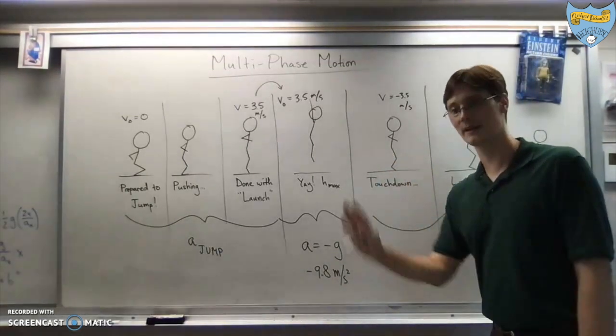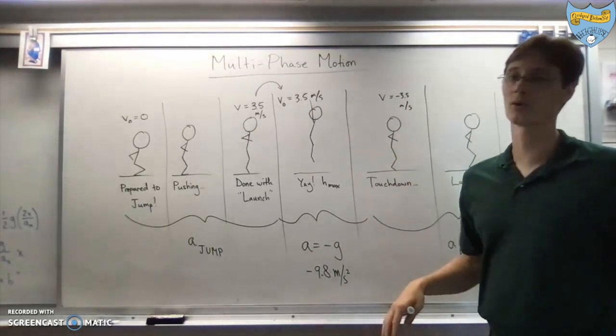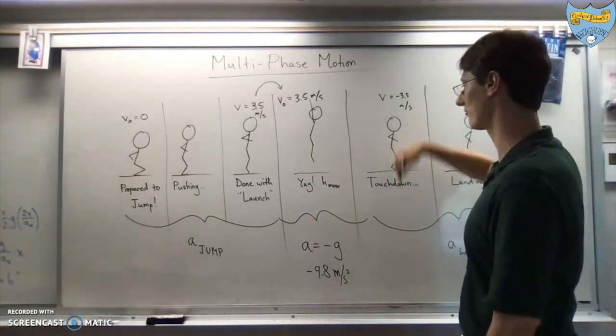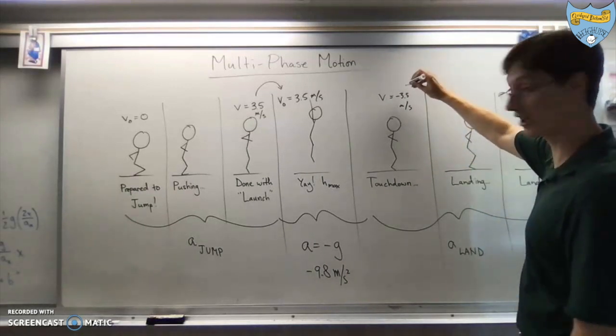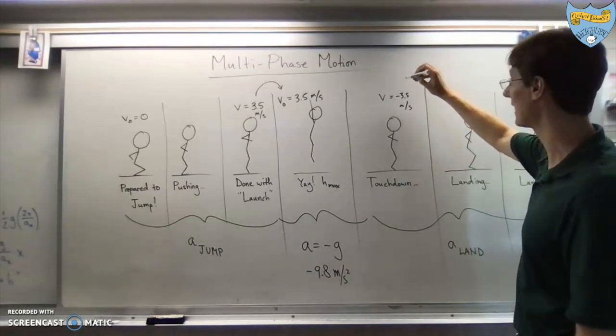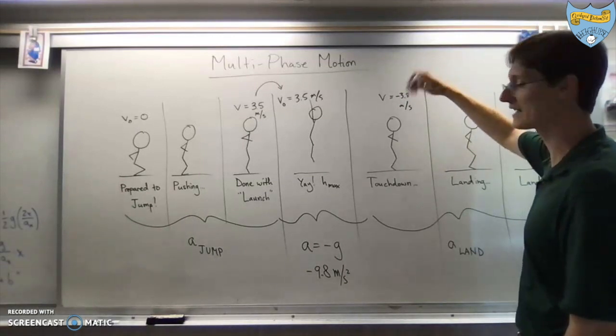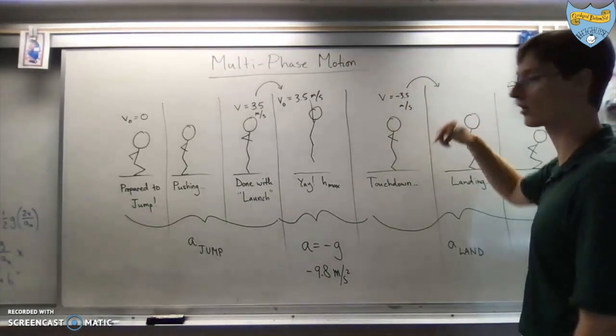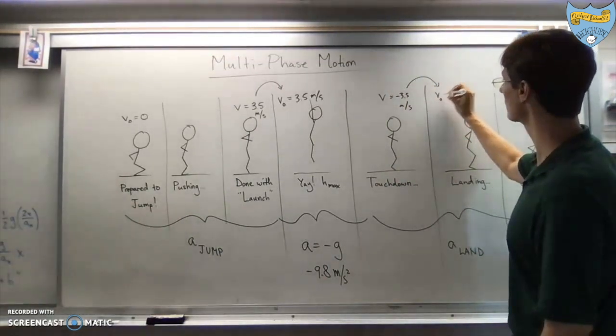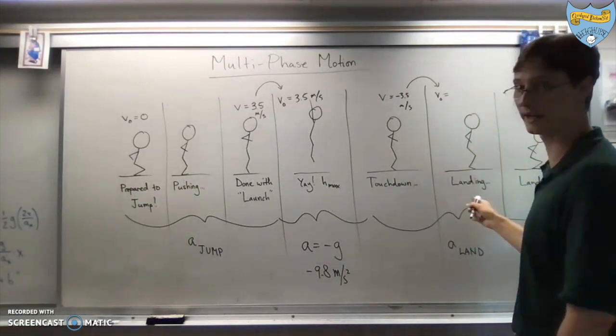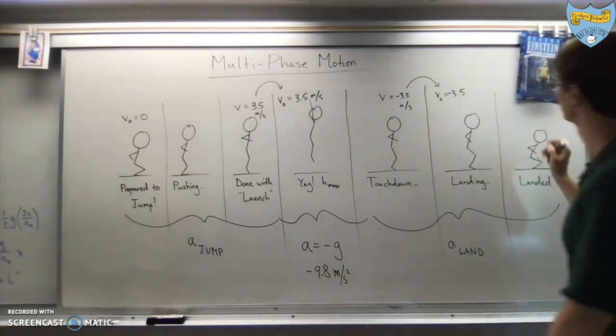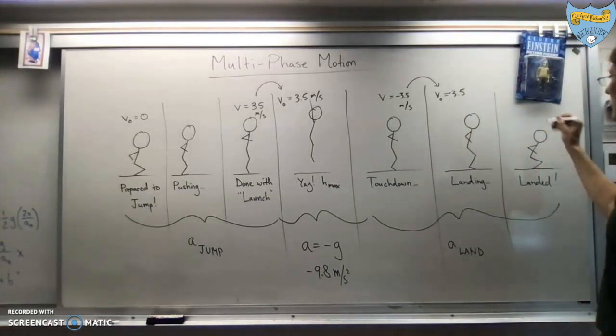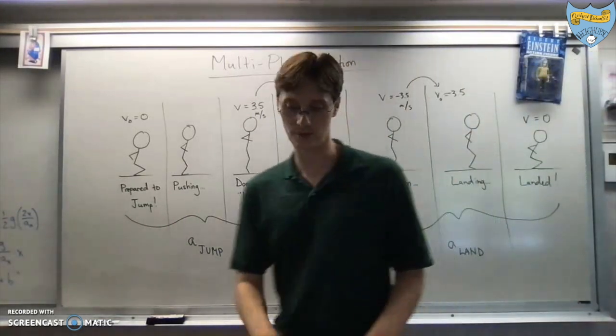Unless it's a question about jumping off of like a diving board or something like that. And then you do have a different final velocity. This final velocity during the landing, or sorry, at the end of the flying through the air part, becomes the initial velocity during the landing. And then finally, at the very end of the question, your final velocity is zero.